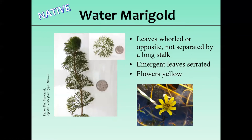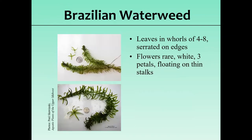We don't have any populations of Carolina fanwort known in Wisconsin, but it's been used in the aquarium and water garden trade extensively, so it could be here or introduced at some point. It looks similar to the native water marigold, which is mostly a soft water species in the northern half of the state and is our only aquatic aster with a large aster-type flower. To tell them apart, look at the leaf arrangement — on water marigold, leaves are not separated by that long stalk as they are on fanwort.